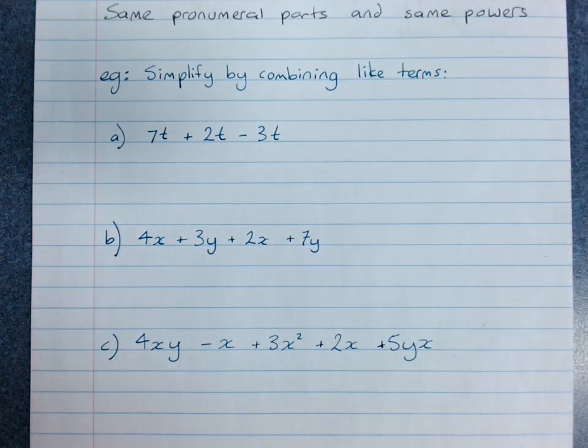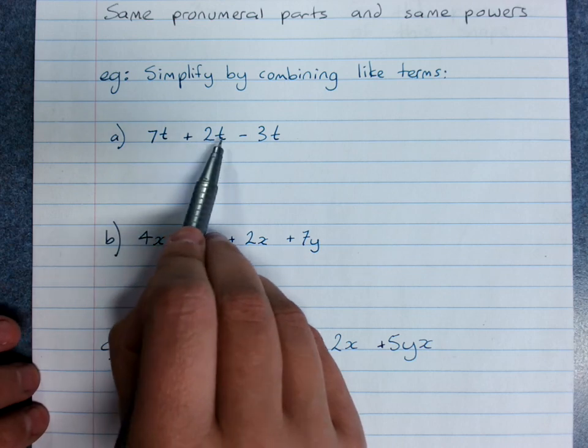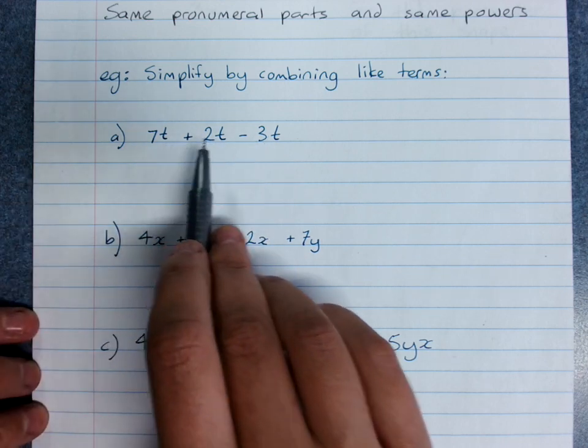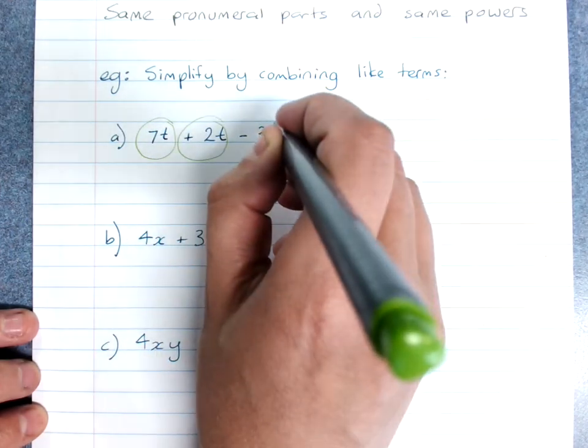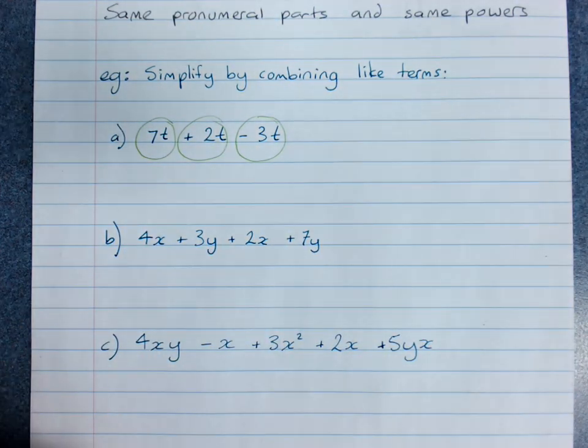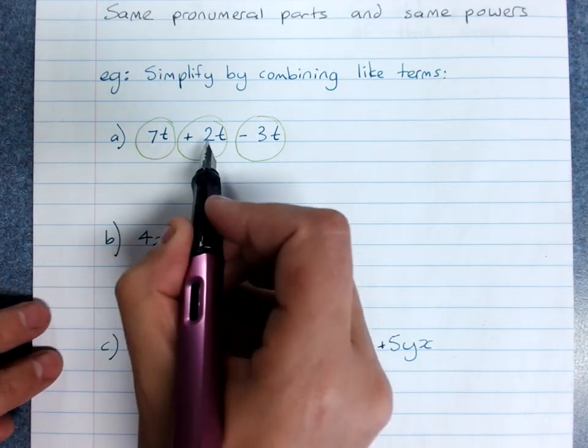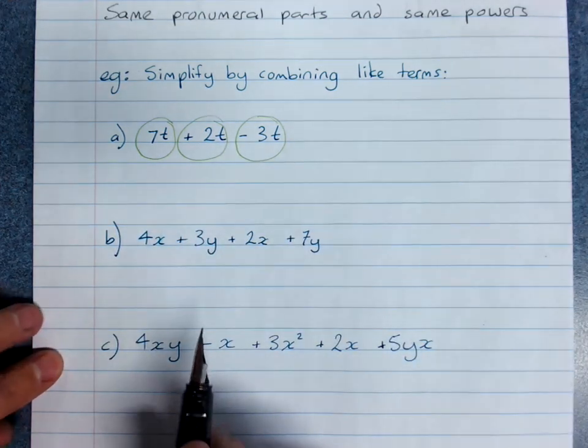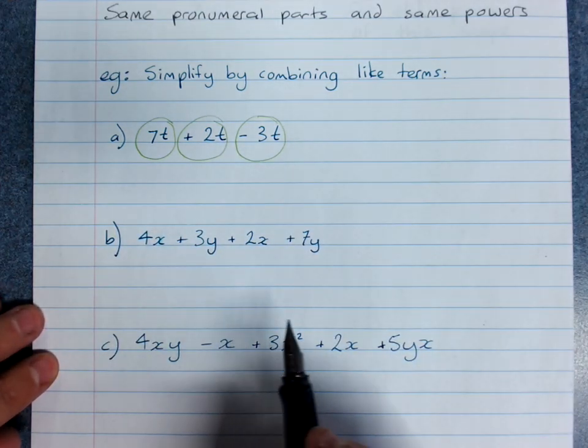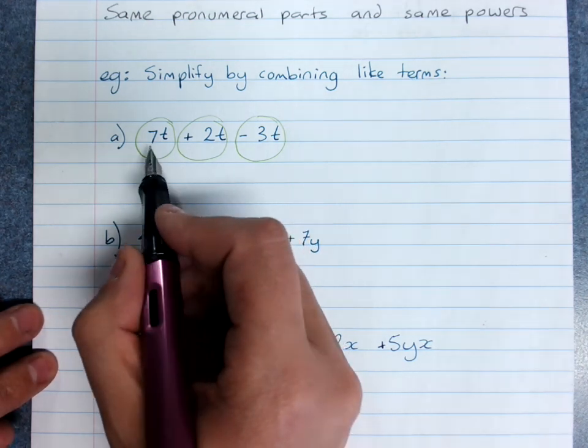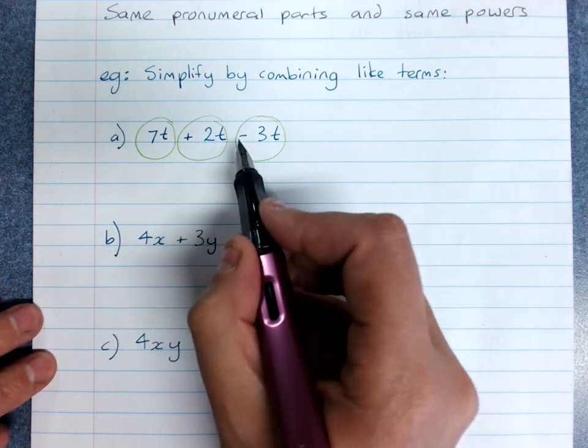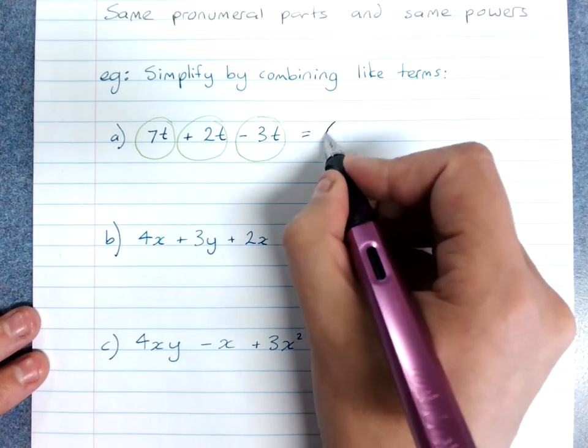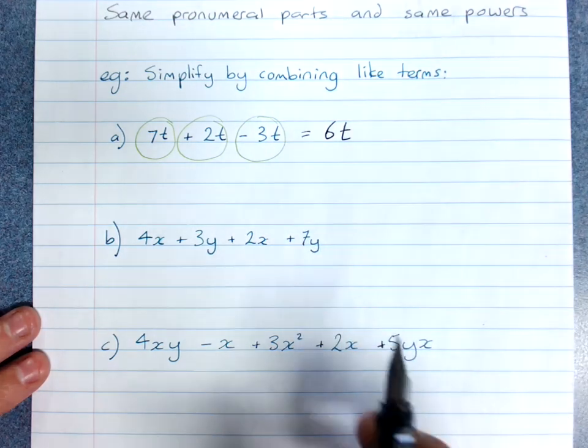To add or subtract by combining like terms, we identify the like terms: t and t and t. They've all got the same pronumeral part. So 7t plus 2t minus 3t - they're all like terms, and I just add or subtract the coefficient of the like terms. So really, 7 lots of t plus 2 lots of t would be 9 lots of t, minus 3 lots of t gives me 6 lots of t: 6t.